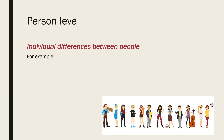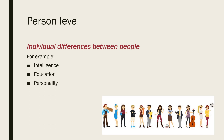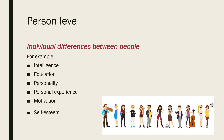Other examples under the person level include intelligence and education including problem solving skills, personality — covering the psychodynamic, humanistic, and trait conceptions we'll look at in the year 12 course — as well as someone's personal experience. Motivation and self-esteem are two others that also fit under the person level.